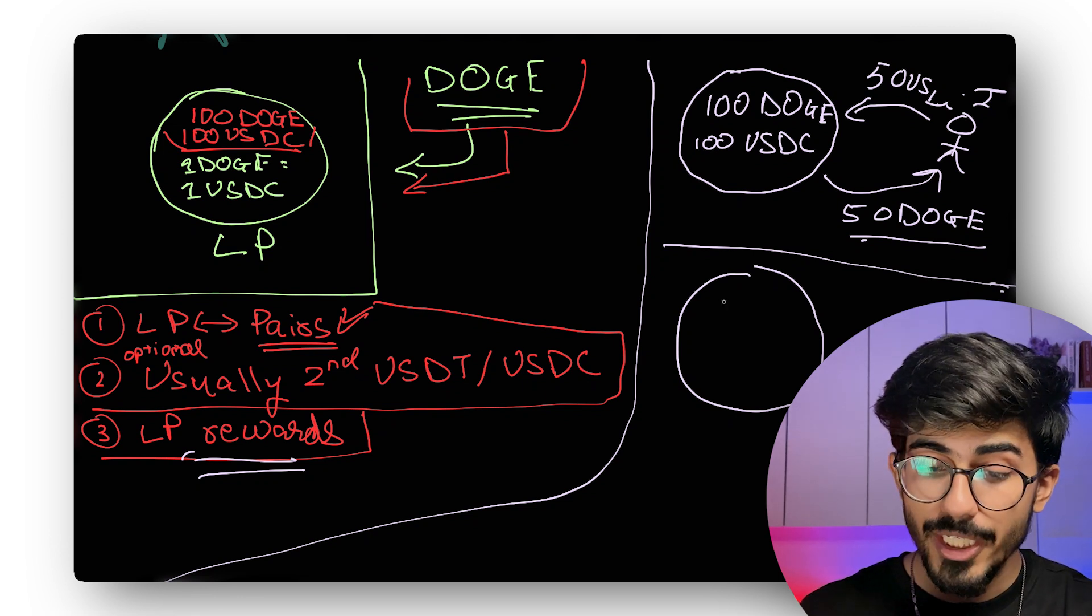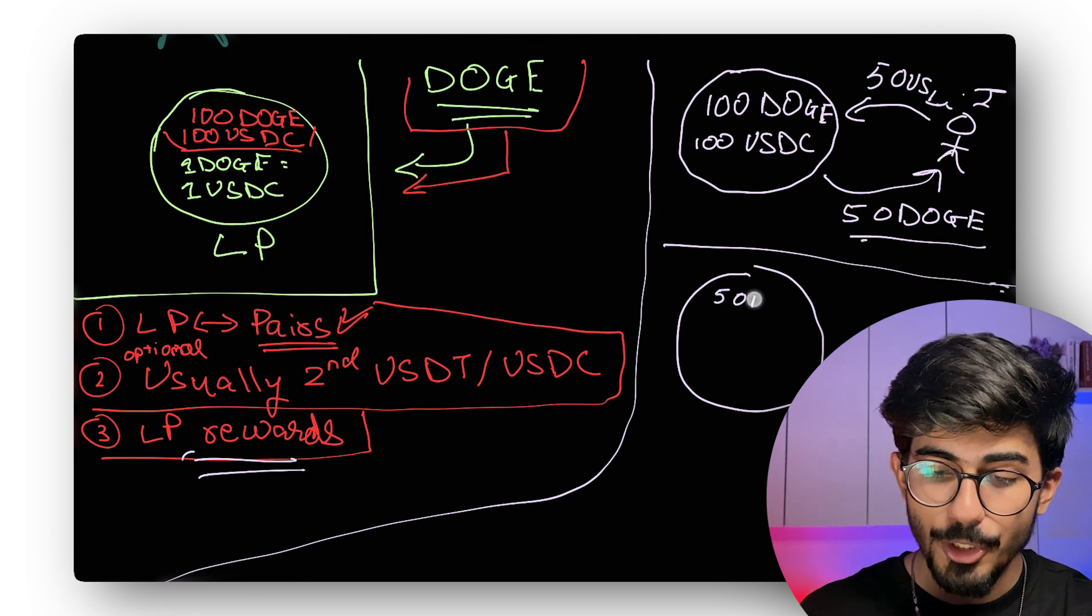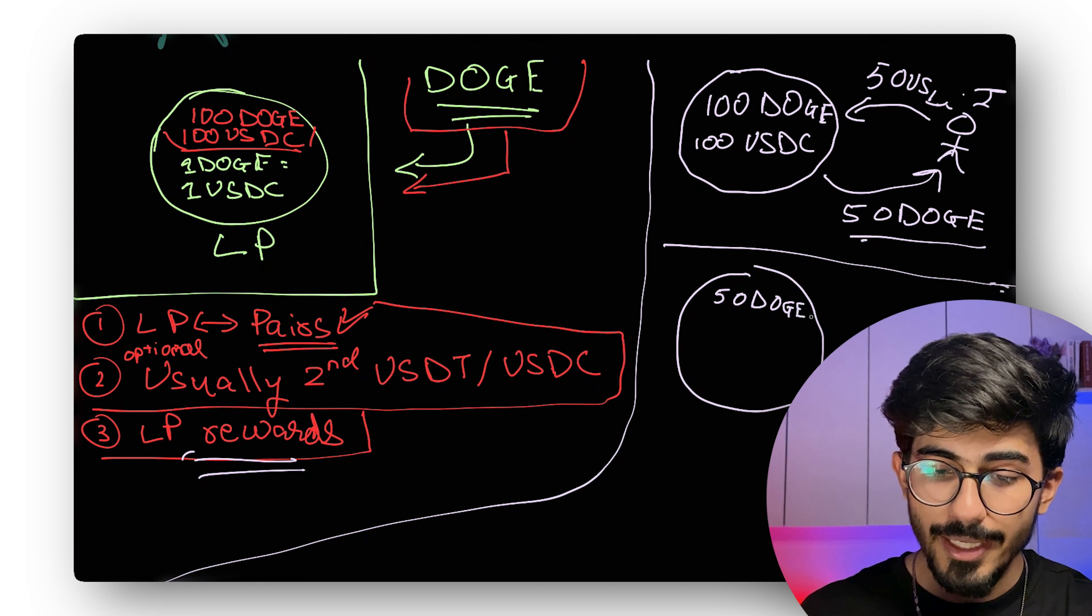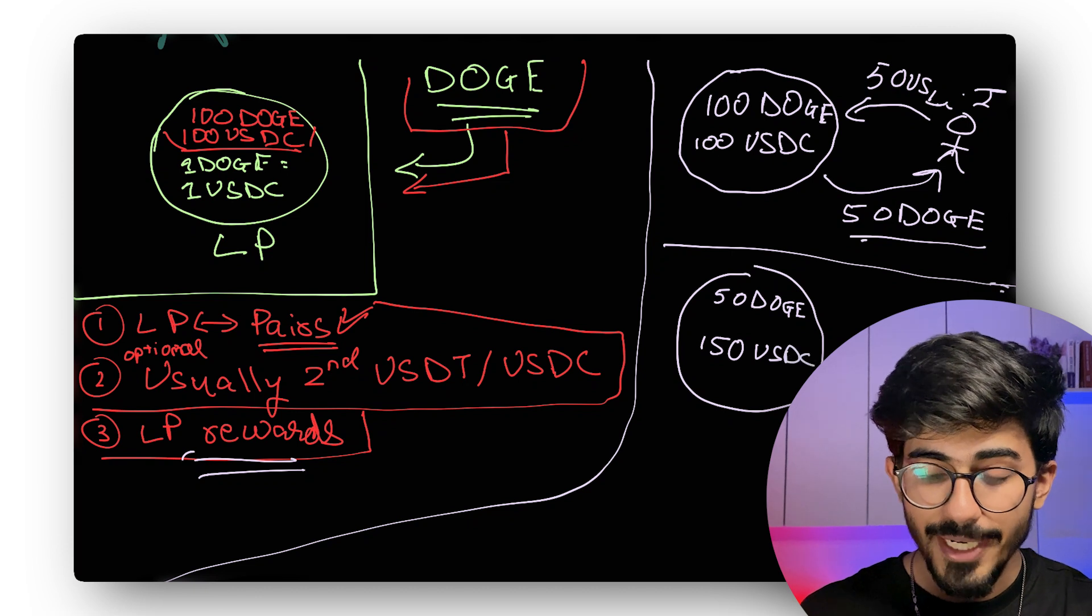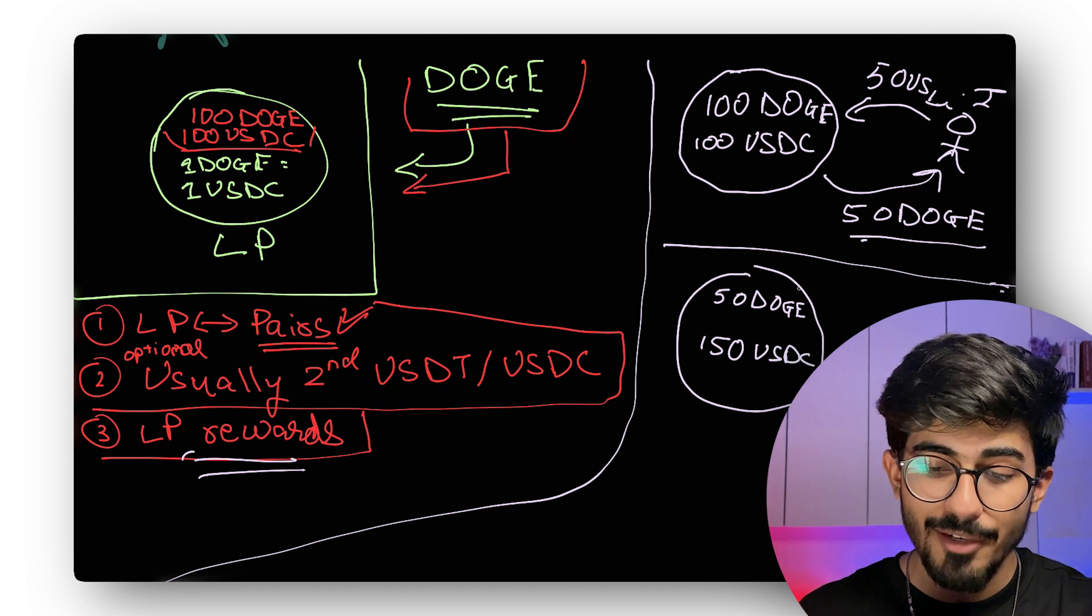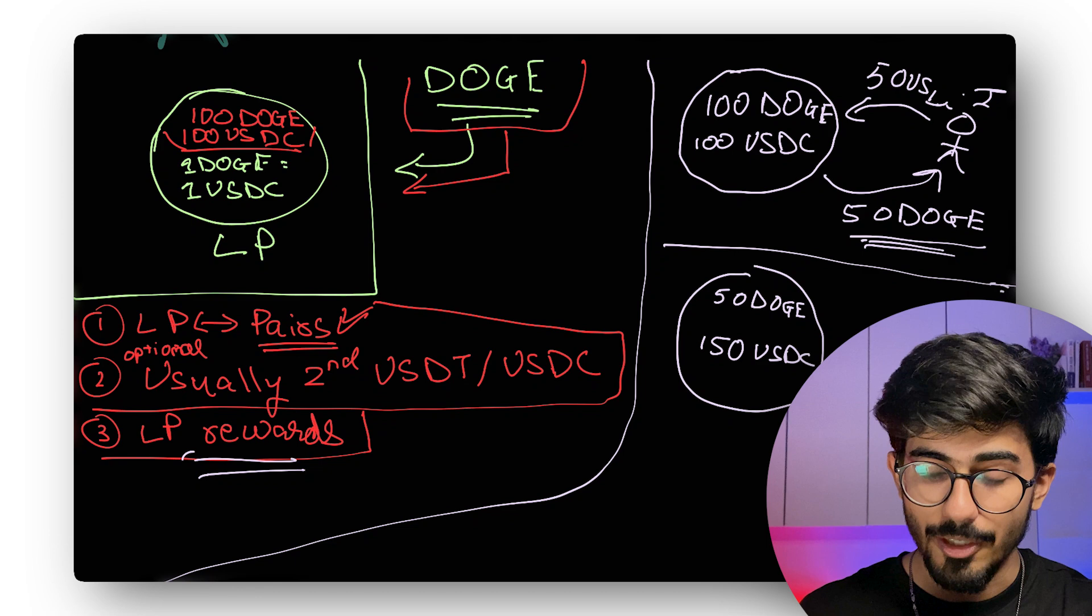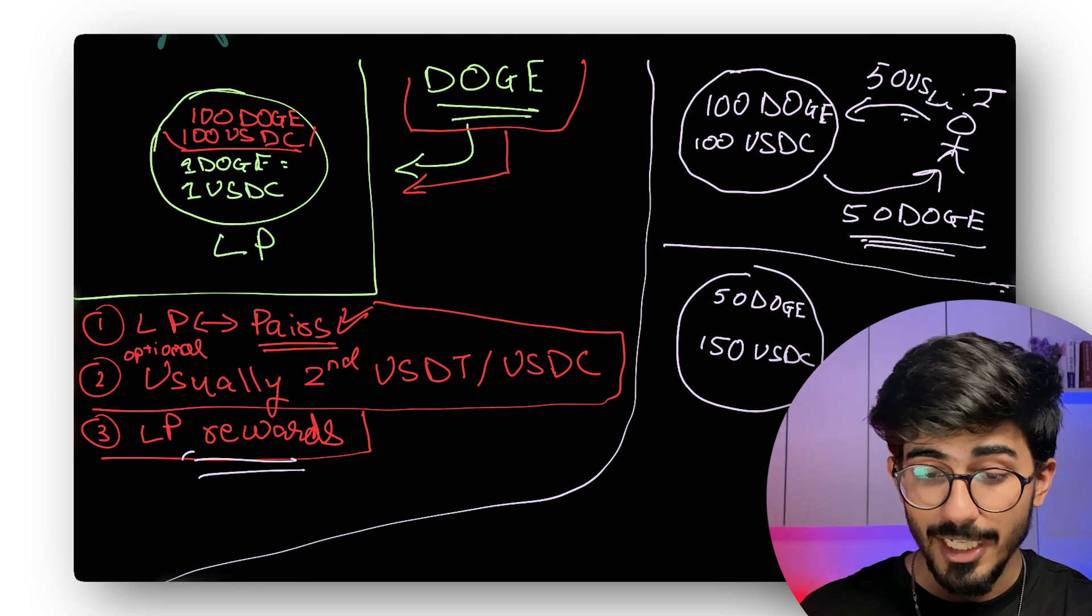And let's get back to the price movement. So over here, the new liquidity pool actually becomes 50 Doge. And over here, it comes out to be 150 USDC, right? Because 50 USDC was given and 50 Doge was taken out. So that's how liquidity pool actually changes.